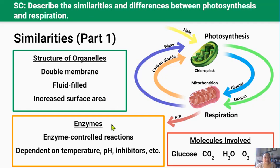Similarity two — enzymes: both photosynthesis and cellular respiration require complex chains of chemical reactions that need to be catalyzed by enzymes. Enzymes catalyze reactions by lowering the activation energy needed for a reaction. This means that the rate of both photosynthesis and cellular respiration are affected by factors that affect enzyme activity, including pH, coenzymes, and inhibitors like heavy metals.